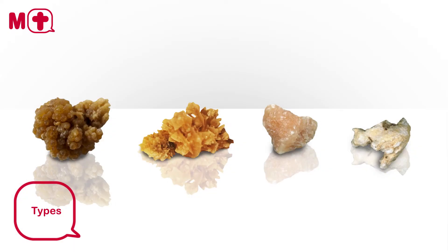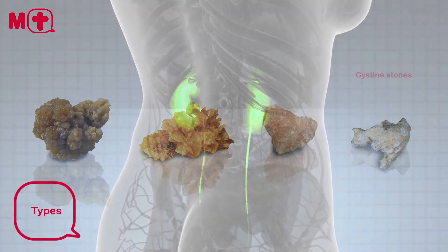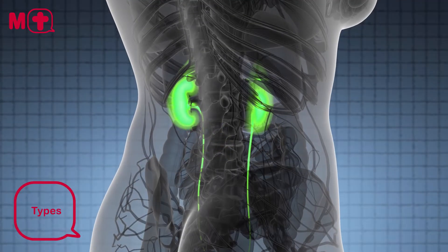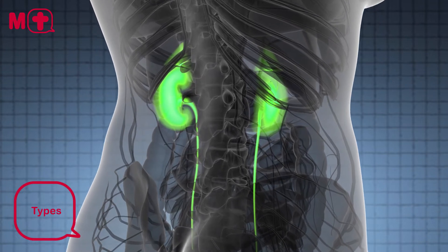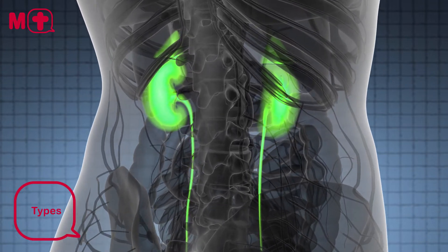Lastly, we have cysteine stones. Cysteine stones are caused by a disorder known as cystinuria, which is a rare hereditary condition that causes cystin, a type of amino acid, to leak into urine.